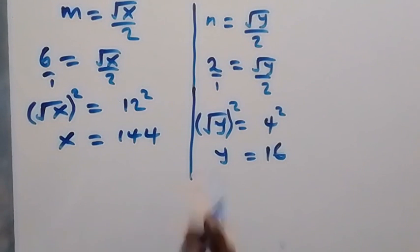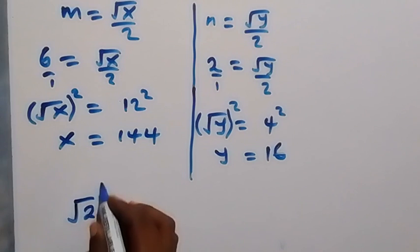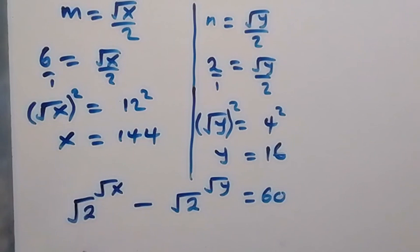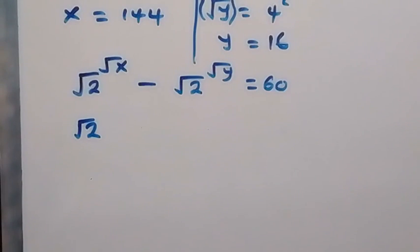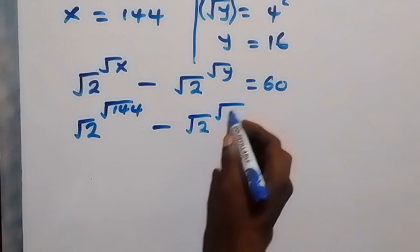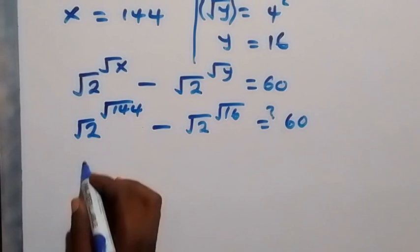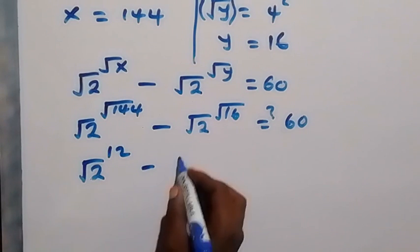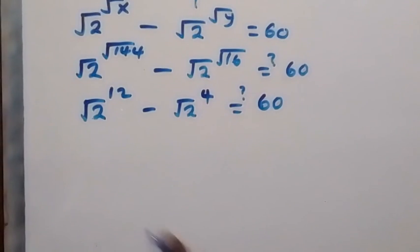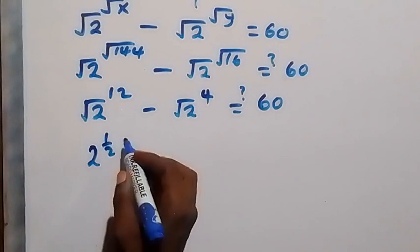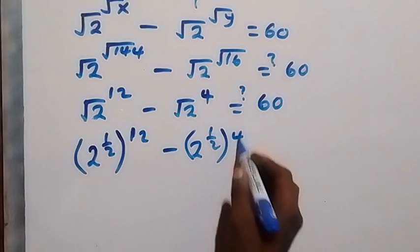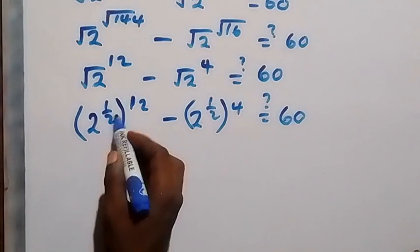Now let's check by substituting back into the original problem: √2 raised to power √x minus √2 raised to power √y equals 60. Substituting x = 144 and y = 16, we get √2 raised to power √144 minus √2 raised to power √16, which is √2 raised to power 12 minus √2 raised to power 4. Rewriting as 2 raised to power half, then raised to power 12, minus 2 raised to power half, then raised to power 4. The powers multiply: 2 raised to power 6 minus 2 raised to power 2.